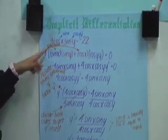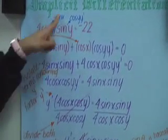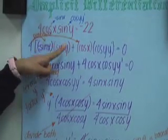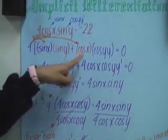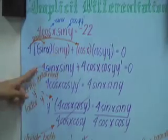I bring out the 4 because it's constant. So u prime times v plus u times v prime equals 0 because this one is constant.